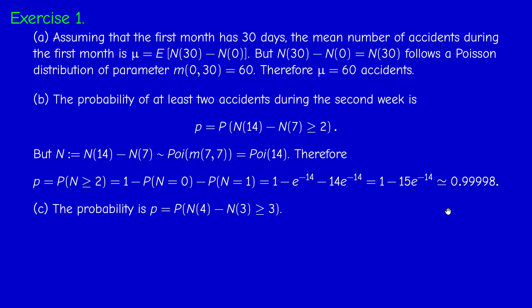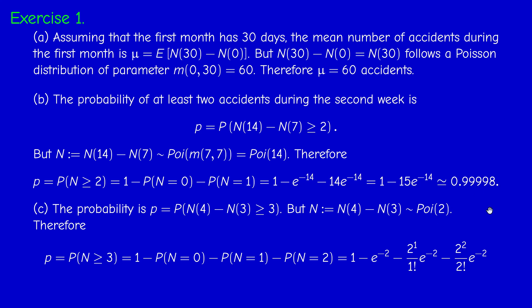The last question is similar. The number of accidents during the fourth day is N(4) minus N(3), so we compute the probability that N is at least 3. This follows a Poisson distribution with parameter 2×1 = 2, where T=1 and S=3. We write N ≥ 3 as the complement of N < 3, meaning N is 0, 1, or 2. So it's 1 minus [2⁰/0! × e^(−2) + 2¹/1! × e^(−2) + 2²/2! × e^(−2)], which gives 1 minus 5e^(−2), approximately 0.323.